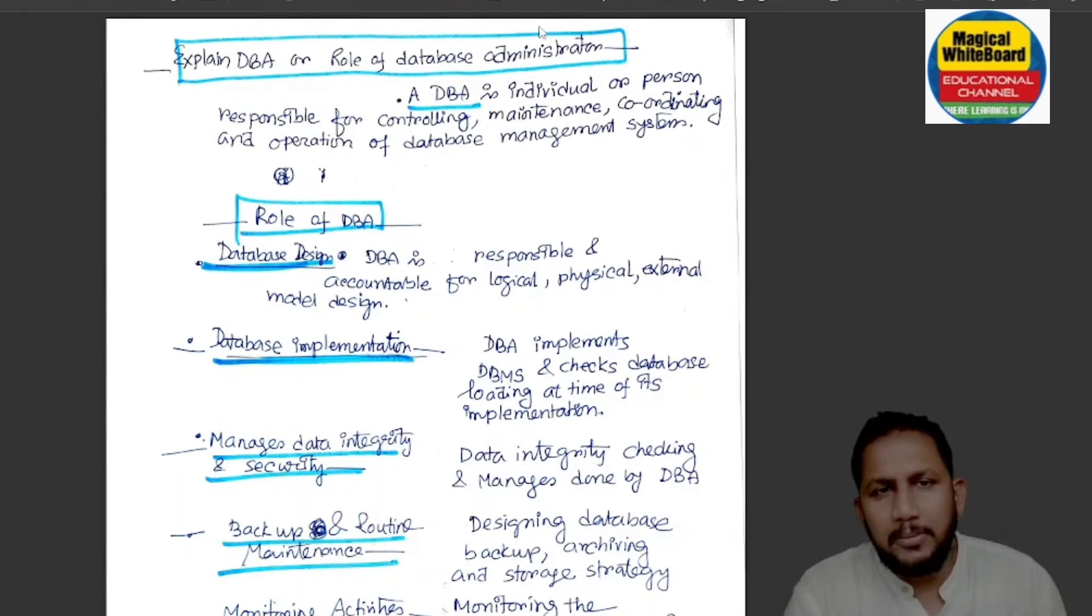In this video, we will discuss the DBA definition. We will discuss the DBA's work. It is a very important question. DBA's definition is 1 mark and 2 marks. The role of DBA is 3 marks. The most important question is the role of DBA's definition format.